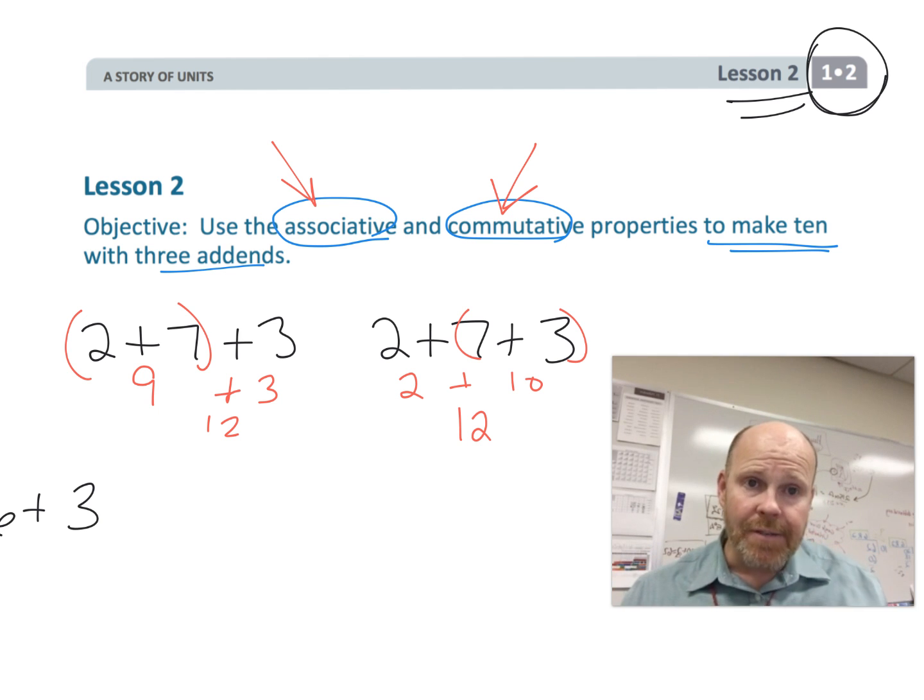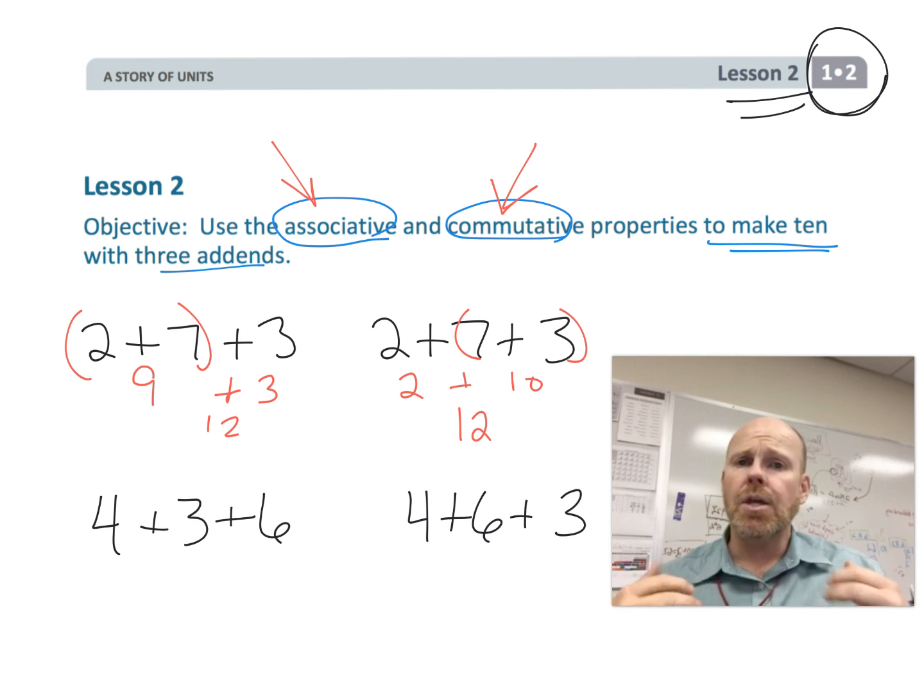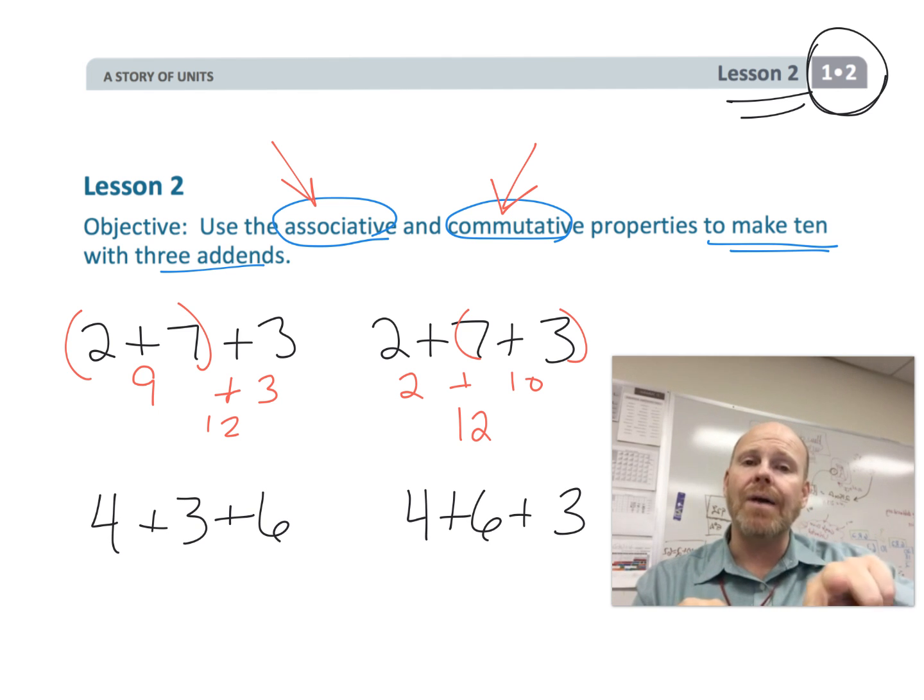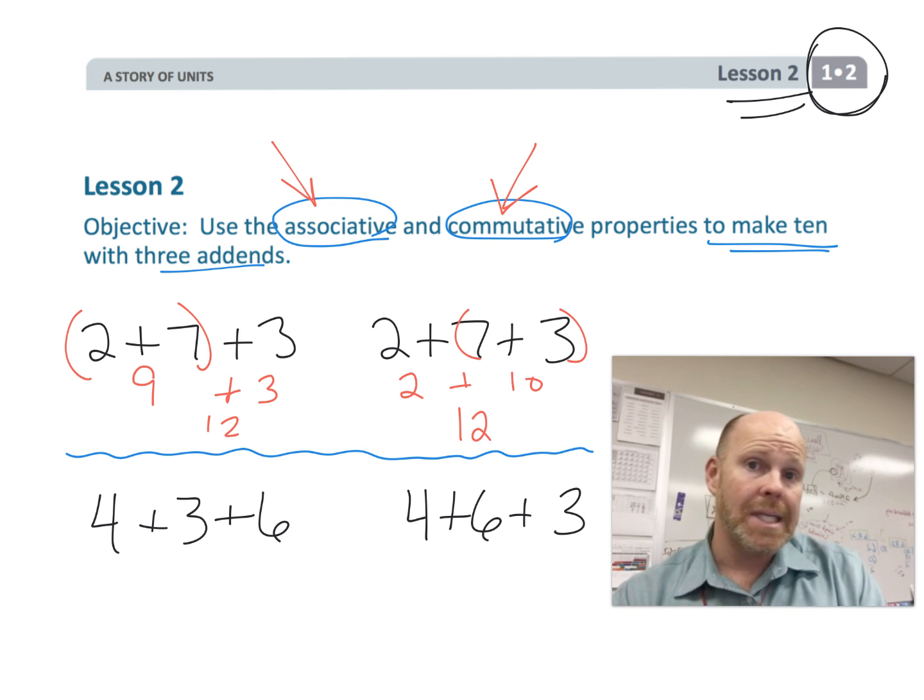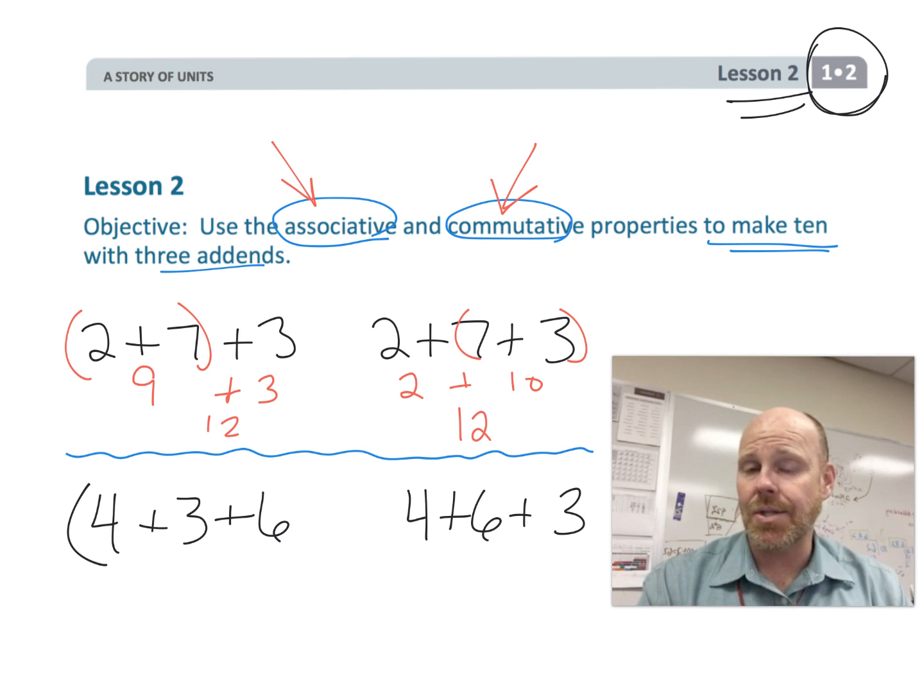The commutative property, like commuting your car, right. The commutative property says we are allowed to move the numbers around to make it more convenient for us, knowing that we're still going to get the answer. For example, 4 plus 3 plus 6. Well, 4 plus 3 is 7, plus 6 is 13.